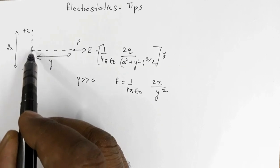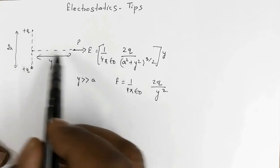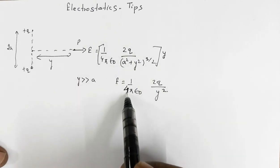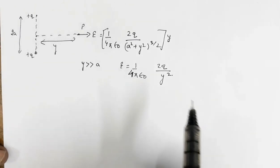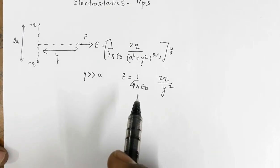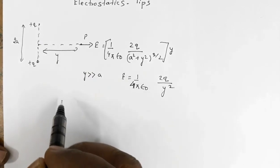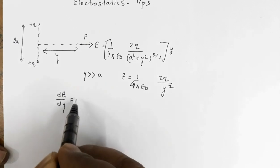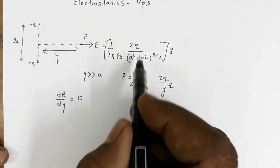So this is the expression for the resultant field. Now another important result: what will be the maximum value of electric field? Electric field will be maximum when dE/dy = 0. Now if you differentiate...